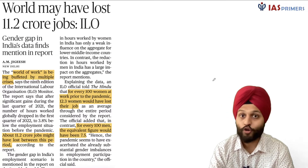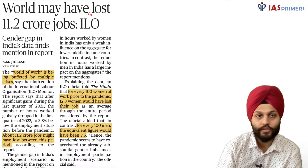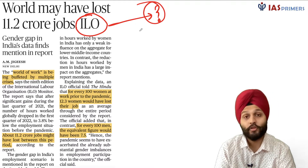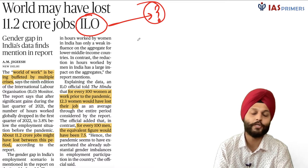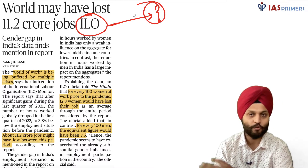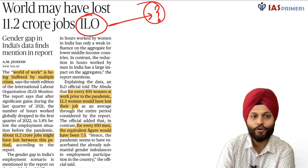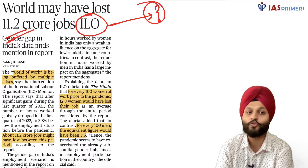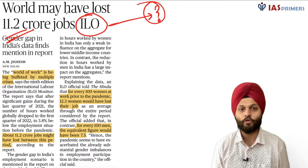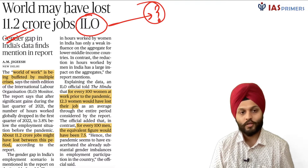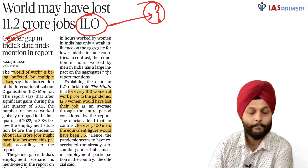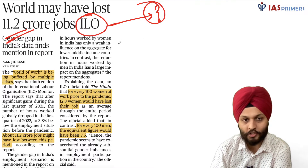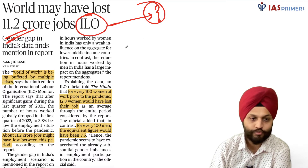The next article says the world may have lost 11.2 crore jobs, according to the International Labour Organization, which is a specialized agency of the United Nations. We have a problem of unemployment in our country as well. With reference to India, it is clear that Indians have lost jobs and the unemployment rate has increased. A large number of Indians have lost their jobs due to the pandemic.